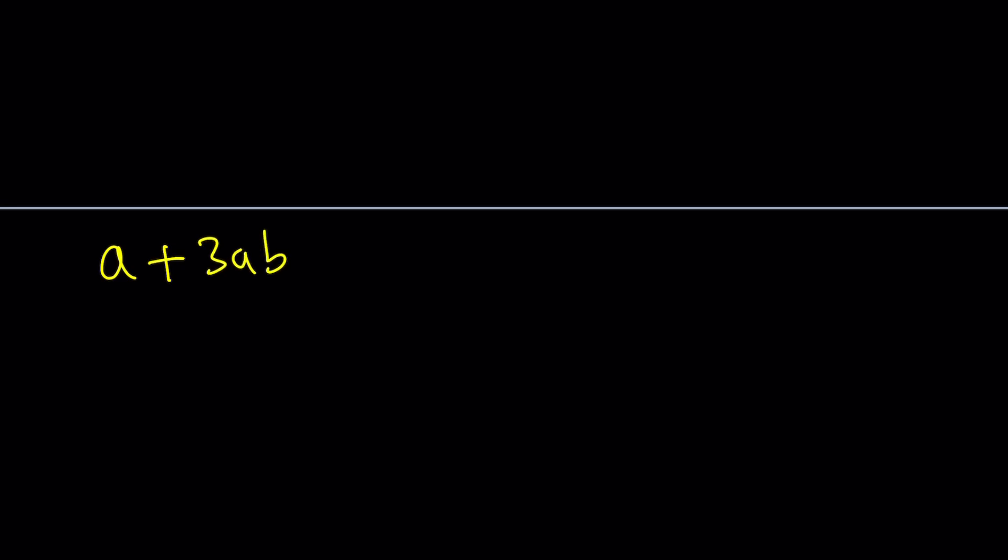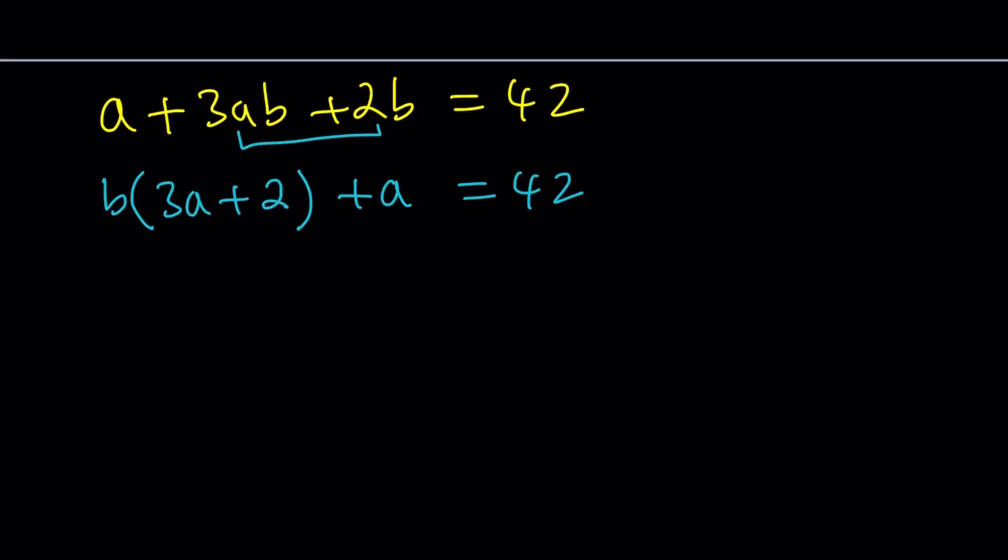We have A plus 3AB plus 2B equals 42, and we're going to be solving for A plus B. To solve this equation, we can do a couple different things. One of the things that is probably easier is to isolate B, one of the variables. In this case I would just pick B, you can also do the exact same thing with A. I guess you can call this the first method.